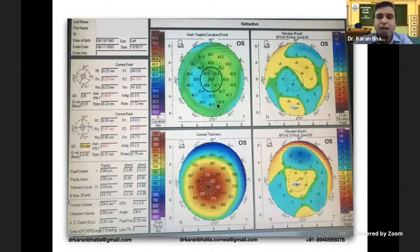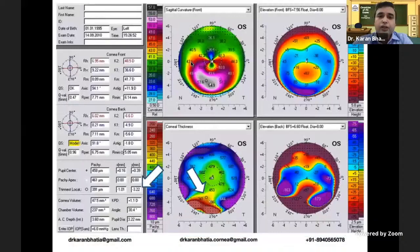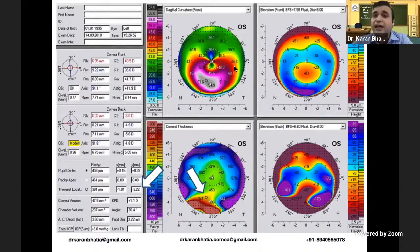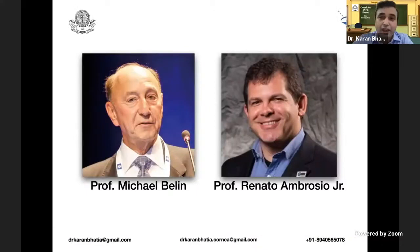The last case shows a crab claw pattern with elevation and increased Kmax — everything abnormal. This is keratoconus, but because it has a crab claw curvature pattern, it is called pellucid-like keratoconus. The talk concludes by acknowledging Professor Michael Belin and Professor Renato Ambrosio Jr., who developed the enhanced ectasia display and have made life for corneal surgeons much easier.